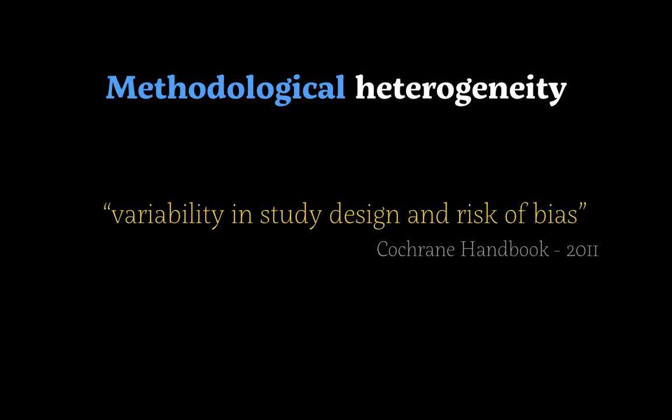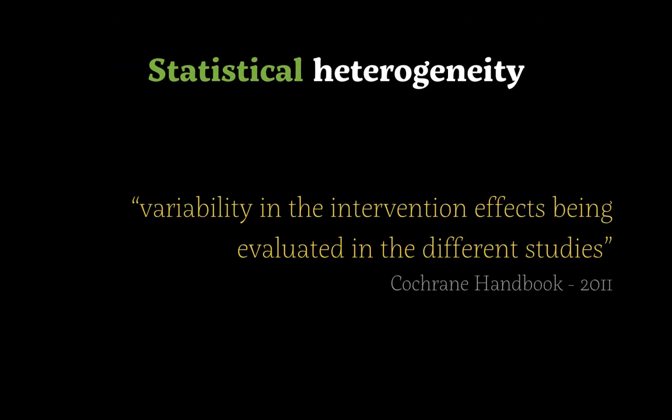The second type is methodological heterogeneity, which looks at the variability in study design and risk of bias. In a systematic review, you typically don't want to mix RCTs, qualitative studies, and case-control studies. You want to focus on a primary study design and a homogeneous risk of bias.